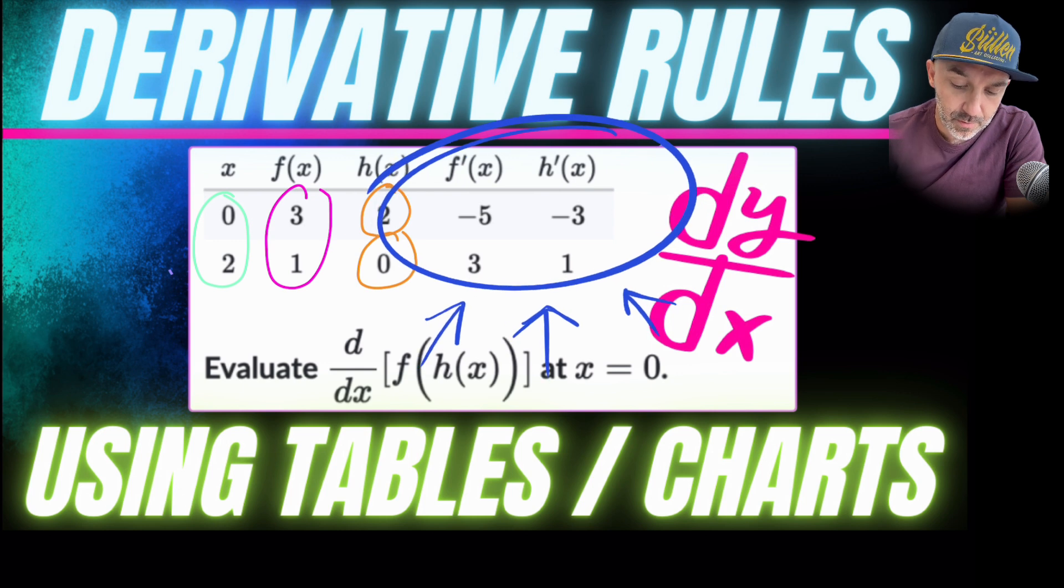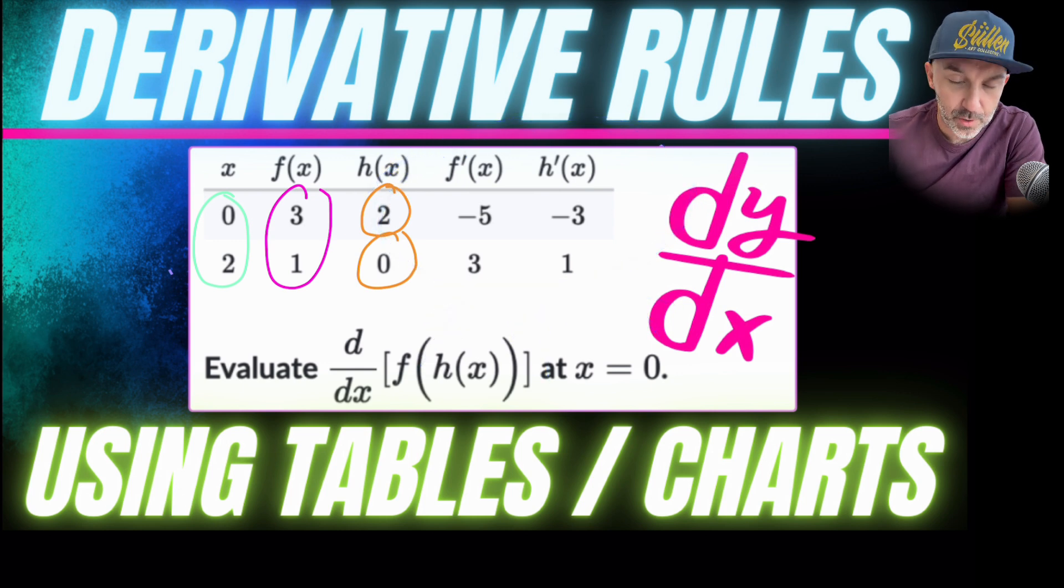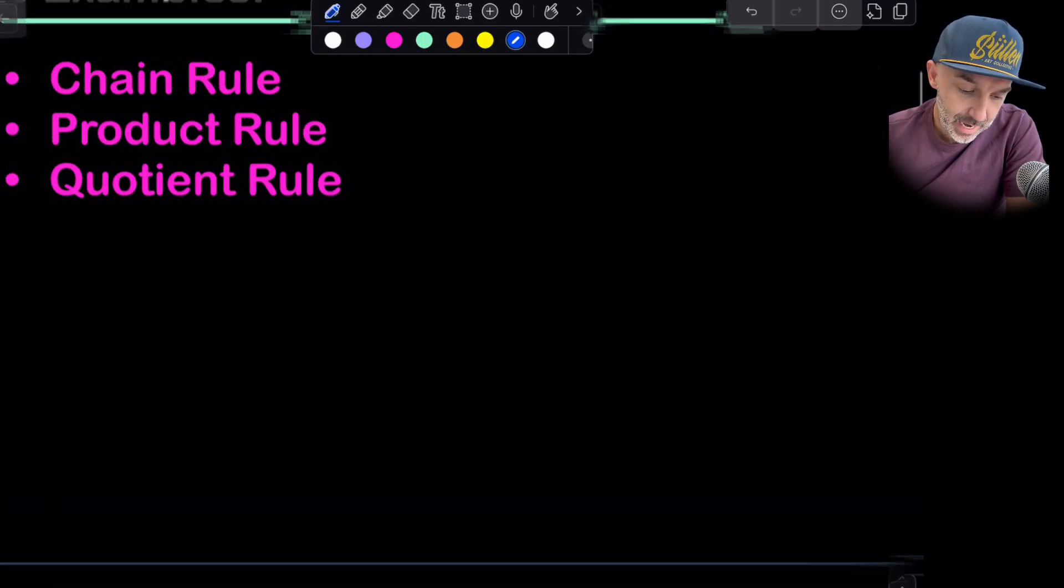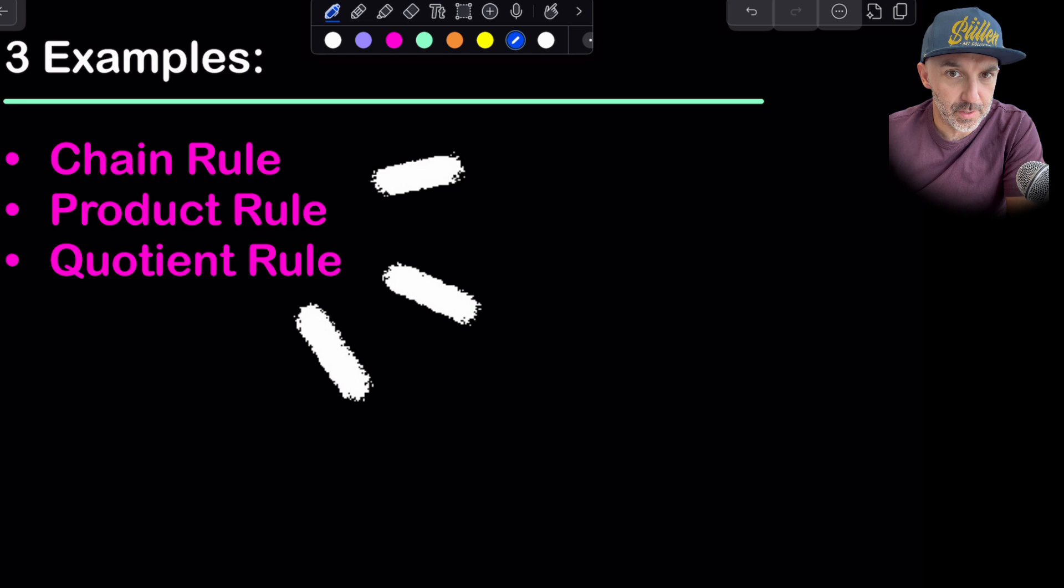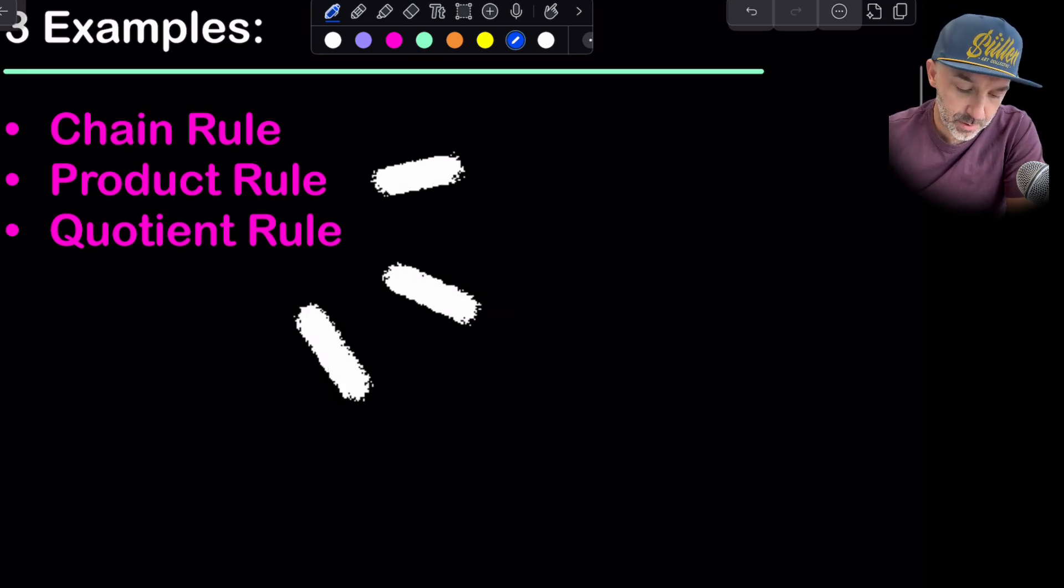And then they go on to give us what the derivatives are too but notice at no point do we actually know what f is or h is. So how do we do this question? Well I'm going to move down here and just going to explain that we're going to first of all do a chain rule, one product rule, then a quotient rule. So off we go.